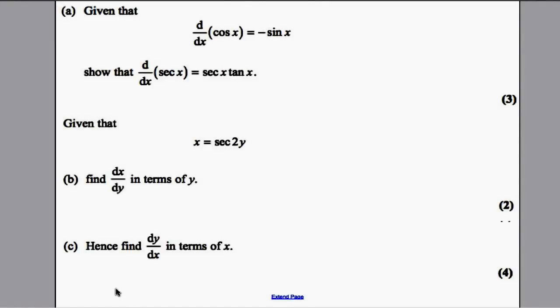This question is about differentiating trigonometric functions. Let's start with part A. We are told that if you differentiate cos x, you get negative sin x. And we're asked to show that if you differentiate sec x, you get sec x tan x.